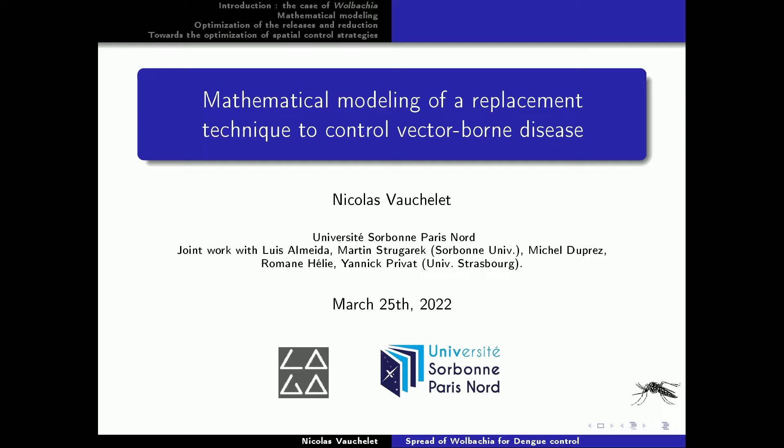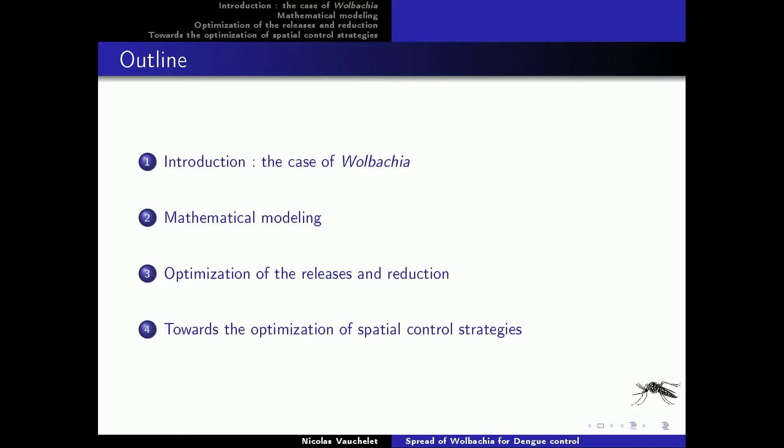This is the outline of my talk. I want to split my presentation into four parts. First, I want to introduce what is Wolbachia — I think many of you already know that, but some of you maybe not. In the second part, I will present the models, and then focus on two results: one result of optimization in time, and one result of optimization in space.